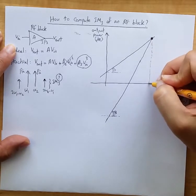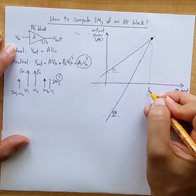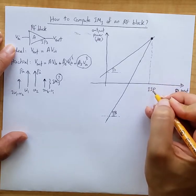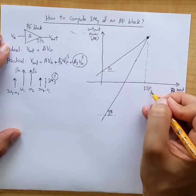Let's say we know that. Let's say we know this point, input-referred intercept point of third-order as shown here in dB.